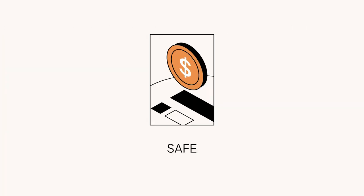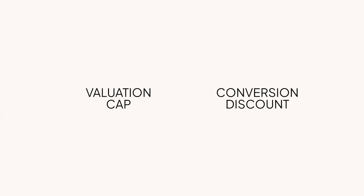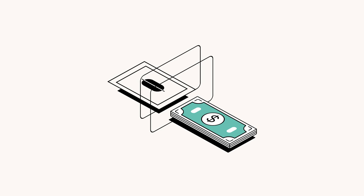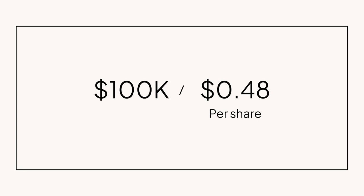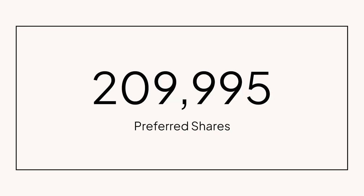Not quite. Carol gave you that money on a SAFE, and the terms of that contract include a $5 million valuation cap and a 20% conversion discount. You work with your lawyers to figure out which term is going to determine her conversion price. In this case, the valuation cap is going to result in a more favorable price for Carol, so that's what she gets to use. It takes lawyers hours to figure it all out, but here's where it nets out: Carol is going to receive her shares at $0.4762 per share, which is a huge advantage over the other shareholders who are now looking at a little over 90 cents. So if Carol gave $100,000 at roughly 48 cents per share, she's going to get 209,995 preferred shares in your company.